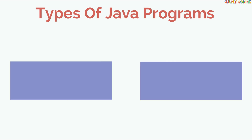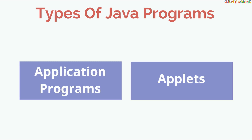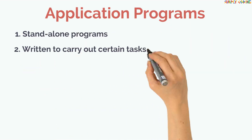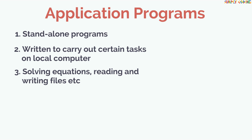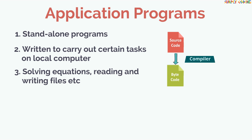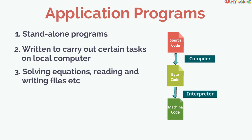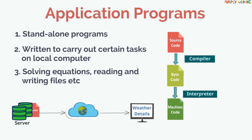When we start writing Java programs, they are of two types: application programs and applets. Application programs are standalone programs written to carry out certain tasks on a local computer, such as solving equations, reading and writing files, etc. The application program can be executed using two steps: first, compile the source code to generate bytecode using the Java compiler; then execute the bytecode program using the Java interpreter. Examples of application programs include servlets, which are programs that run on a web server to generate dynamic content.